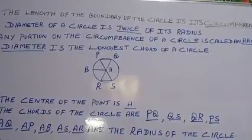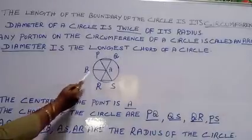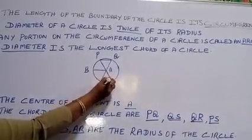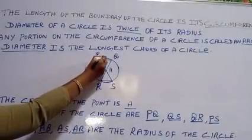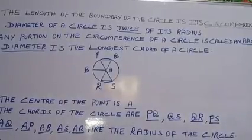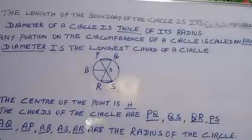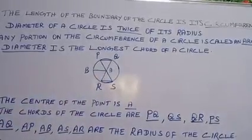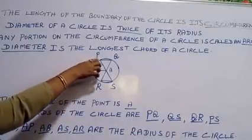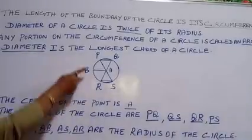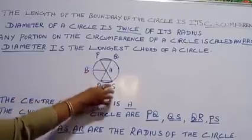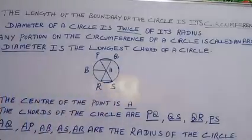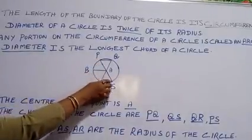Any portion on the circumference of a circle is called an arc. This part, you know, this is arc — PQ is the arc of the given circle. The diameter is the longest chord of a circle. This is also a chord, children — P and S. The chord is nothing but a line segment joining any two points on the circumference of the circle. PS is the chord.